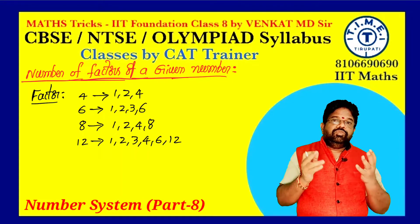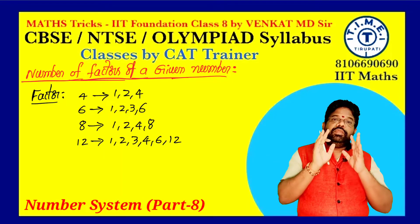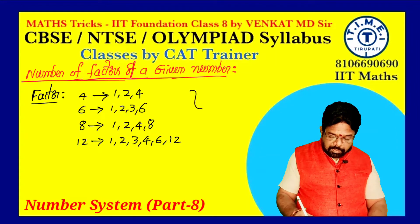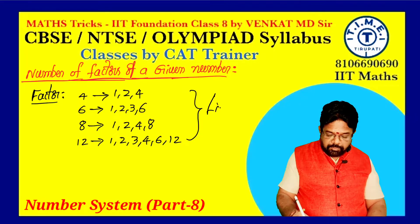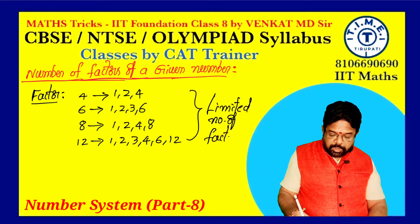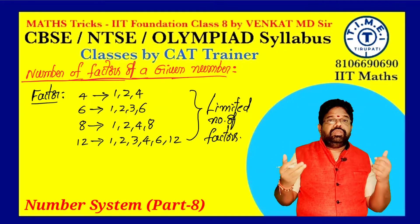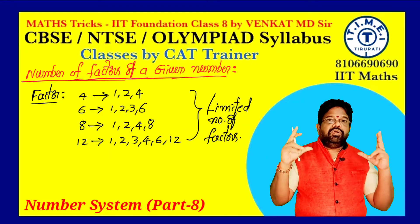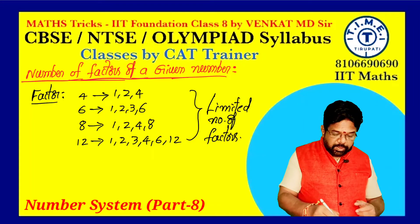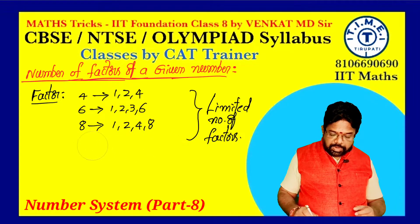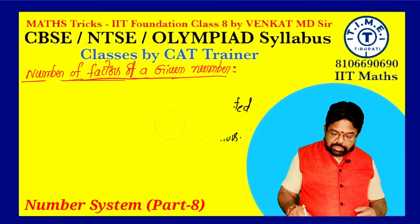So 4 is divisible by 1, 2, and 4 — those are called the factors. The factors are only a limited number. Only a limited number of factors are there for any number. It may be 10 or 12 or 14 or 3 — any number — but a constant, limited number of factors are there. In this class, I will discuss in detail how you can calculate the number of factors when a larger number is given.